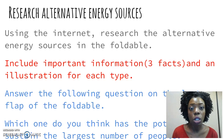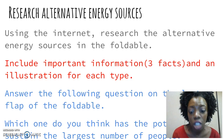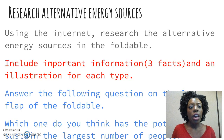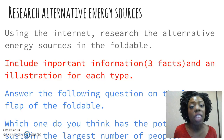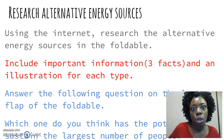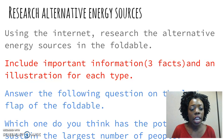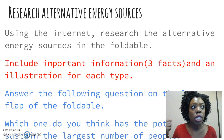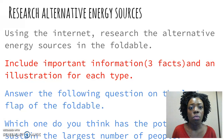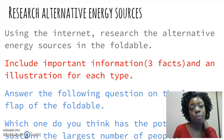Then answer the following question on the last flap of the foldable: which alternative energy source do you think has the potential to sustain the largest number of people? Think about which one is the best — which one could keep the most people's lights on in a big, urbanized city like Detroit, New York, Dallas, Quebec, or Toronto? You've got to make a decision, make a judgment, have an opinion, and answer that question in your foldable.